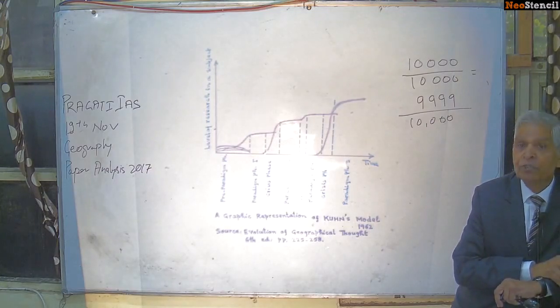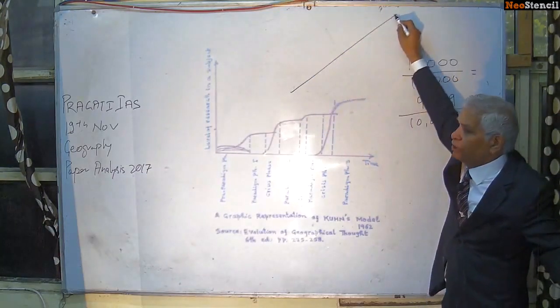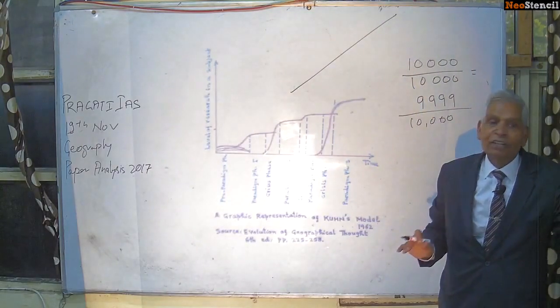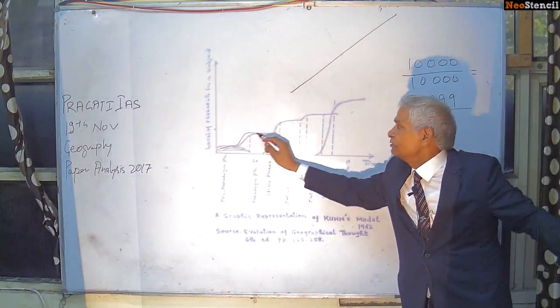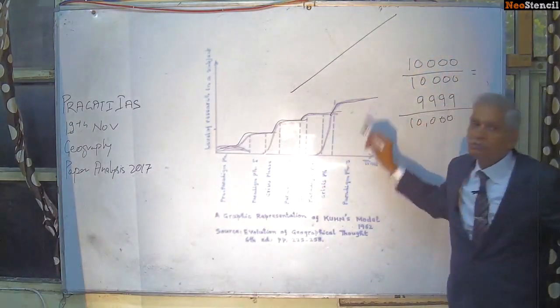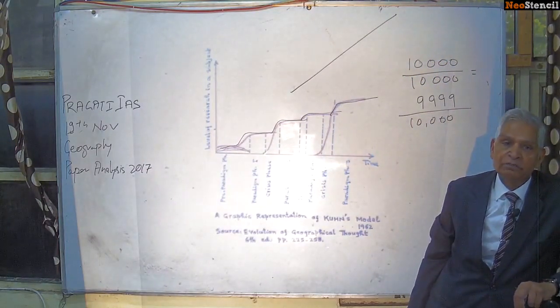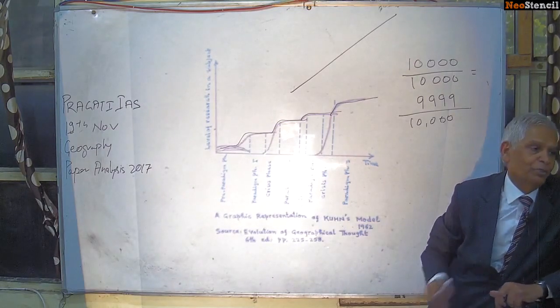This is the model which he applied in social sciences. That knowledge is not a continuous process where every generation will be contributing to the previous knowledge. It is not a steady process. It is a process of crisis. When the peaceful period is there, there is not a growth of knowledge. When there is crisis, then the knowledge grows. This is Kuhn's model.